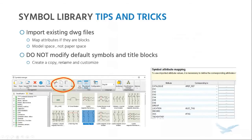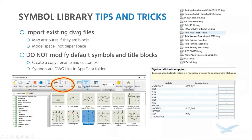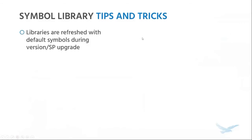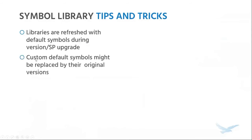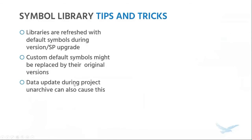Here's a big one — something I tell almost all our users: never modify the default symbols and title blocks. All the symbols that come with SolidWorks Electrical — the default symbols — if you need to customize them, do not modify those symbols. Instead, create a copy, rename that copy, and make your modifications. The reason: these symbols are DWG files stored in your application data folder. When you modify a certain symbol, you're essentially modifying that file in the app data folder. Where this could be an issue: if you're performing a version upgrade or service pack upgrade, SolidWorks Electrical will try to refresh your library with the default symbols — so all the default symbols you've been customizing might be replaced by their original versions. This could also happen if you're running the data update tool when unarchiving a project.